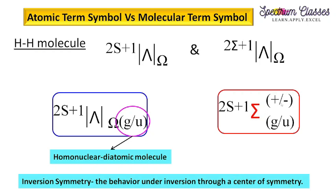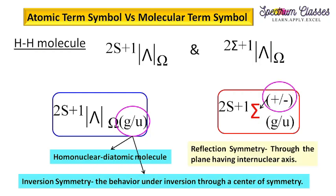In the next term, if we are having a sigma term, then we also have this plus-minus sign. This plus-minus sign is designated to the sigma term only — it is not designated for pi and other terms. This is the reflection symmetry through the plane which contains the internuclear axis.